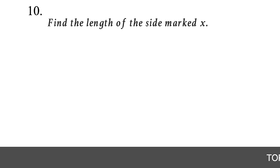Question 39. Find the area of the green shaded portion — a rectangle with an inner triangle removed. Find the area of each shape and subtract. Area of rectangle = length × width = 5 × 7 = 35. Area of triangle = (base × height) ÷ 2 = (3 × 4) ÷ 2 = 6. Area of shaded portion = 35 - 6 = 29.